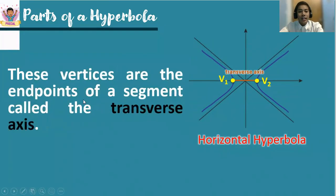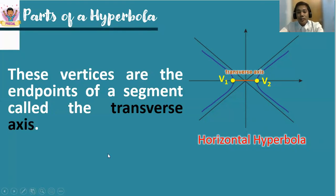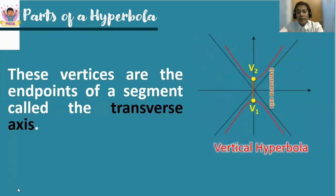These vertices are the endpoints of a segment called the transverse axis. This orange line is the transverse axis and the endpoints are v-sub-1 and v-sub-2. On a vertical hyperbola, the transverse axis is also a vertical line.